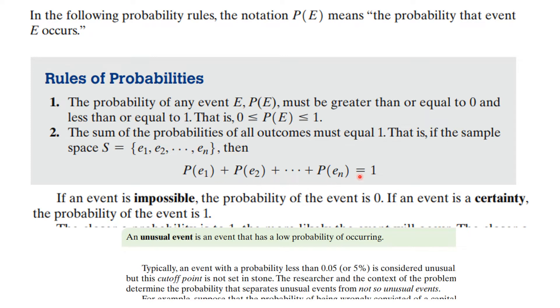And if you add up all the probabilities of all the events, it is 1. Something must happen. If an event is impossible, the probability is 0. If it's a certainty, the probability is 1. And an unusual event is an event that has a low probability of occurring. A lot of times in statistics classes they will say less than 5% is unusual, but the cutoff point really depends on you as the analyst.